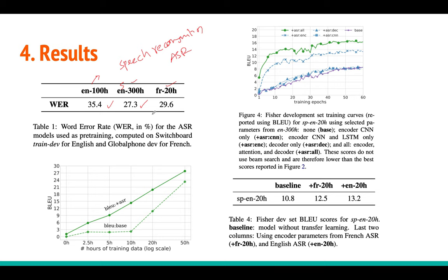The second result diagram shows Spanish-to-English translation BLEU scores, where the x-axis is the number of hours of translation data and the y-axis is the BLEU score. The baseline (random initialization, no pre-training) is much lower — for example, at 2.5 hours of data the BLEU is quite low. With ASR pre-training initialization and fine-tuning, you get a significantly higher line. At 50 hours of data, the baseline is around 20 BLEU while ASR initialization gets around 27-28 — a huge improvement.